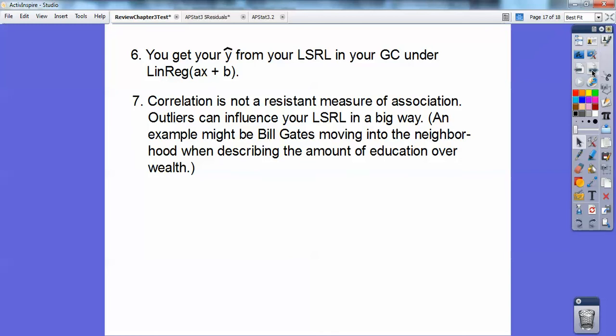Correlation is not a resistant measure of association. Outliers can influence your correlation big time, so it would be able to influence your least square regression line also in a big way. An example, this would be great on an AP test, you always want to put an example like Bill Gates moving into the neighborhood when you're describing the amount of education versus wealth. If Bill Gates moved into the neighborhood, he's a total outlier, and that would change everything drastically, change your correlation and your least square regression line.